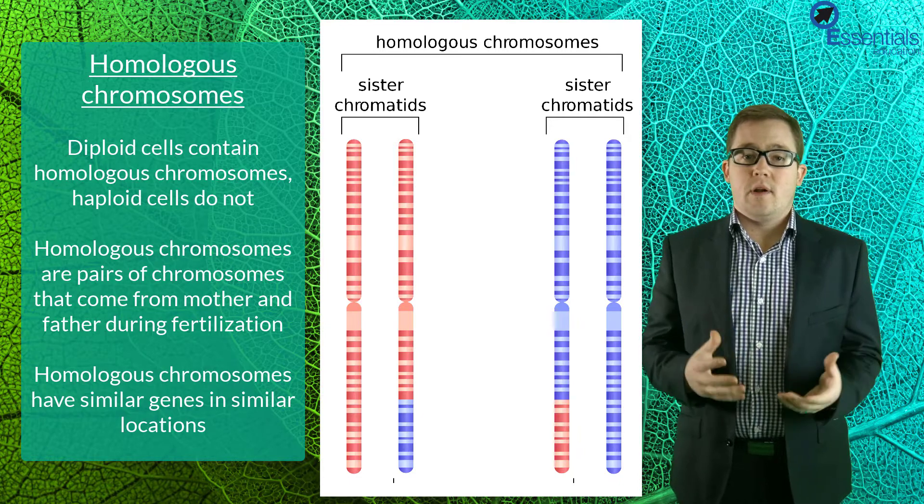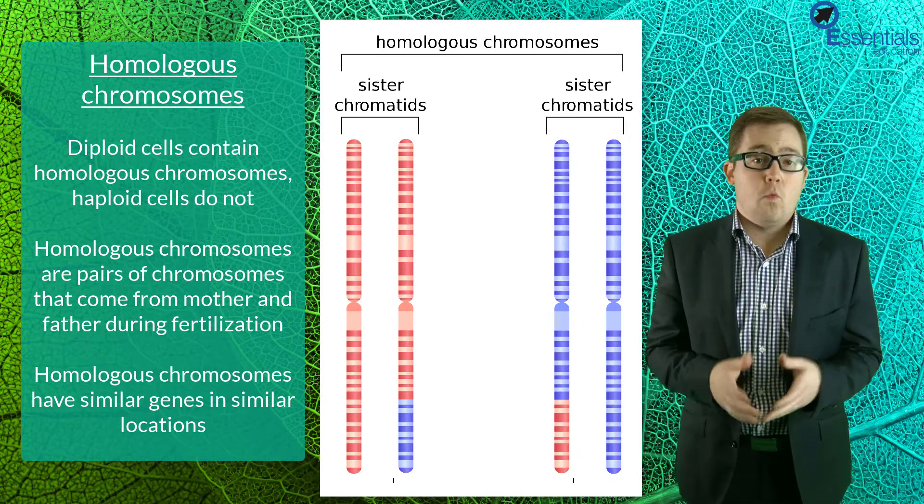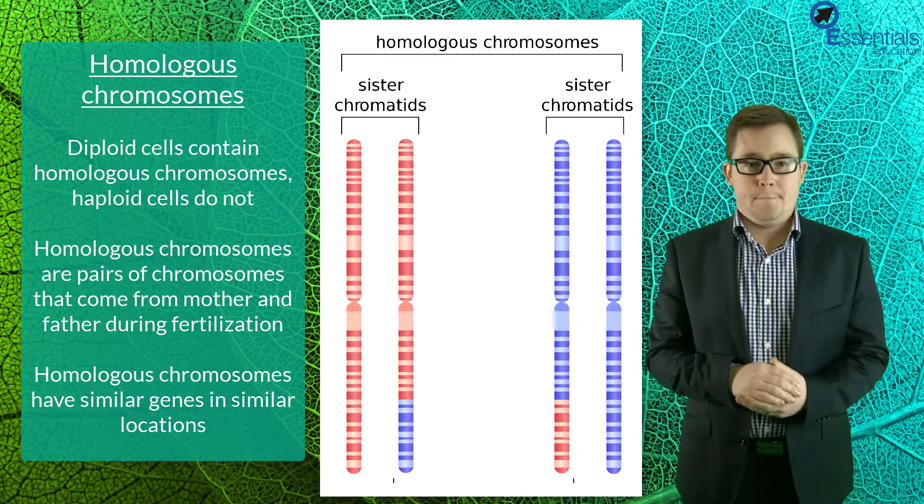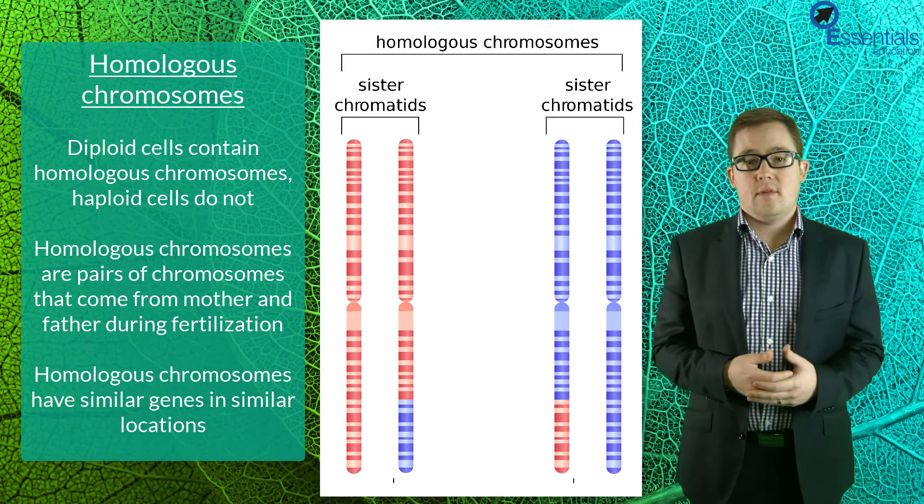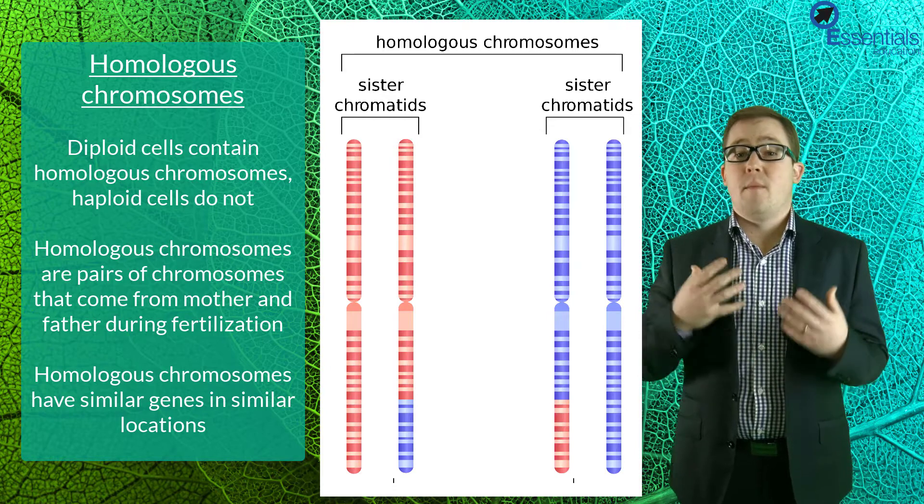In actual fact, corresponding spots on homologous chromosomes will contain genes that code for the same thing. So in effect, diploid organisms have a backup of every gene, one from mother and one from father.